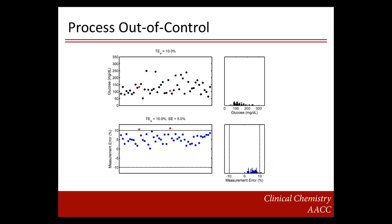Now let's say there is an out-of-control condition that caused a 5% upward shift in the process — a systematic error condition. The lab is unaware that the out-of-control condition exists. With an out-of-control condition, additional error is added. When you look at the glucose test results in the top left panel, you can't easily identify which results are unreliable. The red dot is an unreliable glucose test result. Plotting the measurement errors in the bottom left panel, you can see the errors shift up, and the glucose test results in red are outside the allowable total error limits, making those results unreliable.